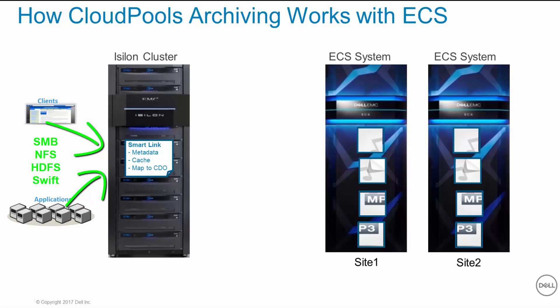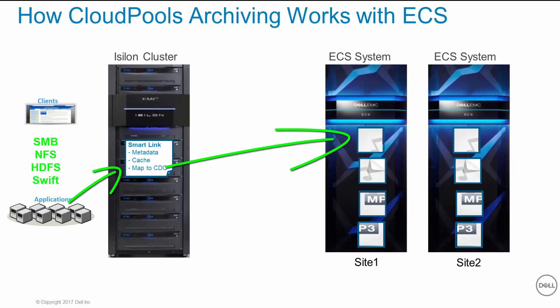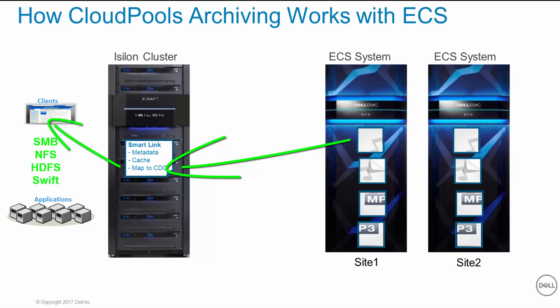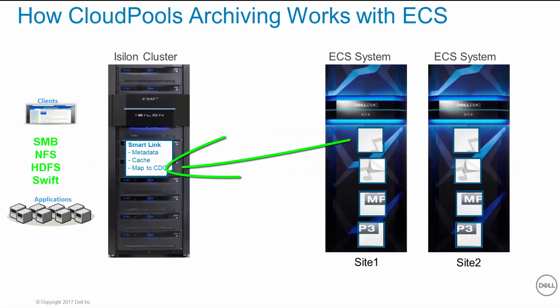The data cannot be accessed directly from the ECS system. The SmartLink files provide users and applications transparent access to the archived data. Client and application access continues unchanged when Cloud Pools are in effect. The only difference in accessing an archived file would be the increase in time to retrieve it from the cloud.